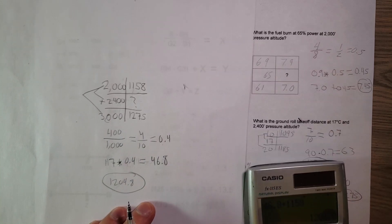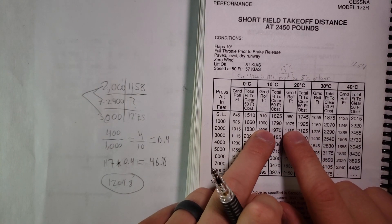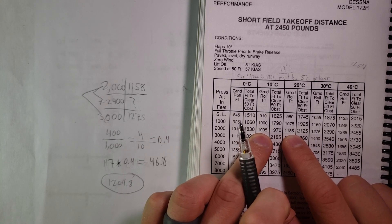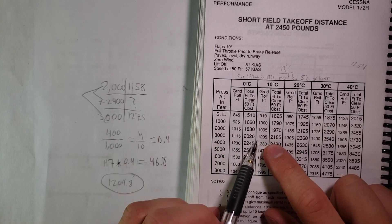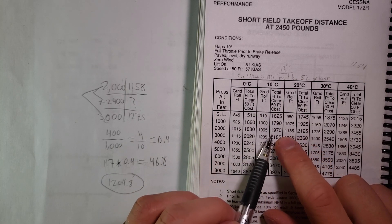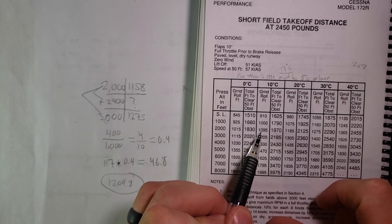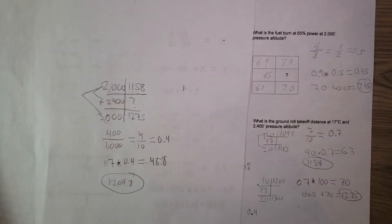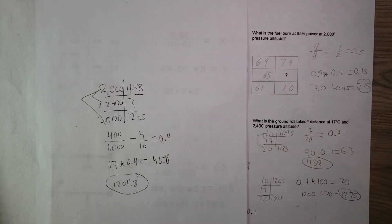That is our answer: 1,204.8 is the ground roll takeoff distance at 17 degrees Celsius and 2,400 feet pressure altitude. The dummy check confirms 1,204.8 is between all four surrounding values, and close to the upper numbers because 17 degrees and higher altitude both increase takeoff roll. This is interpolation for aviation — it feels like a lot with all the numbers, but once you get a system it's really not too complicated. Practice these a lot, and hopefully this lesson made sense.